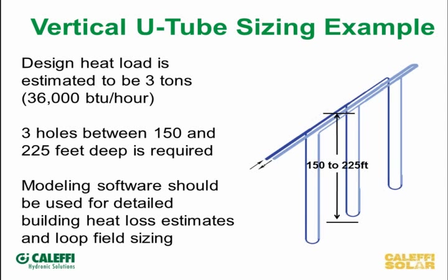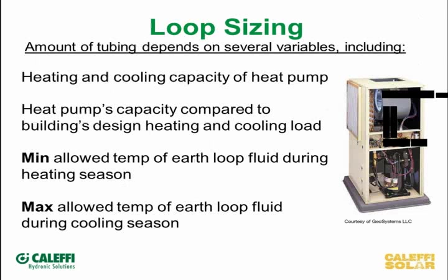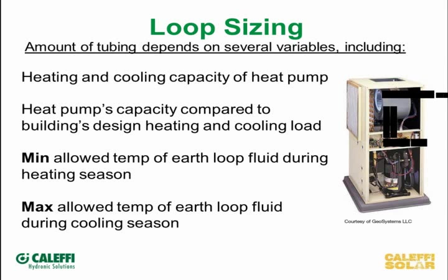Loop sizing — the size and diameter of the loop and the ground contact all play into how well the system is going to work. The heat pump's ability to move that heat is very related to what's going on in the ground, in the pond, or in the borehole. The temperature of the earth or water, the size of the tubing determining GPM flow, how many BTUs you can move — all dependent on tubing size. The amount of tubing, how well it's put in the ground, the contact, whether it's in a well, pond, or trench — all have to be properly designed to accommodate the load. Basically, we're moving solar energy: the earth gets heated by the sun and we pull that energy out through the refrigeration cycle.